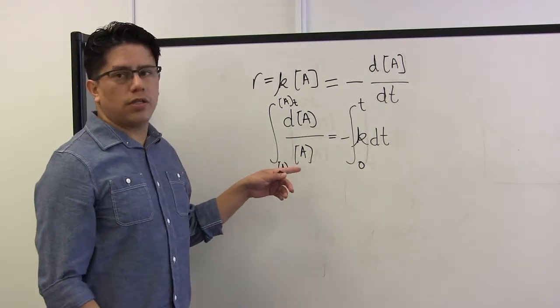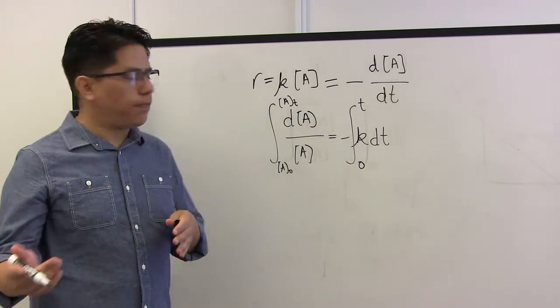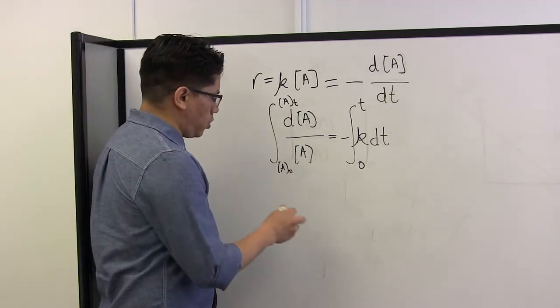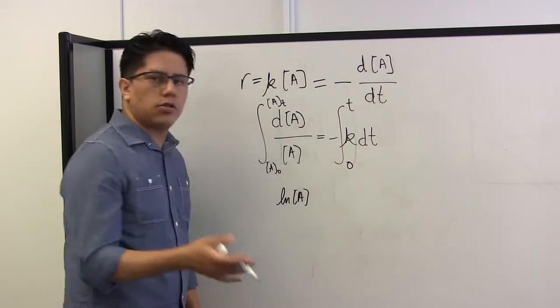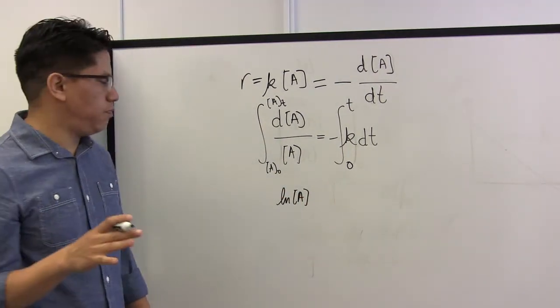Yep, that's right. The integral of 1 over the concentration would be the natural logarithm of the concentration. Perfect. And that's all the calculus that we need. So as you can see, very straightforward.